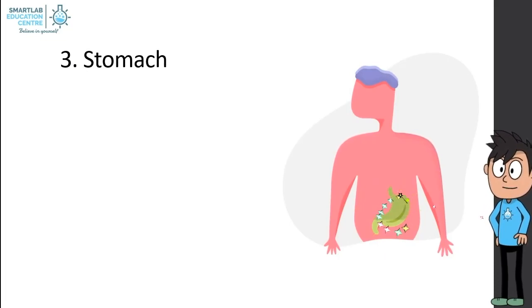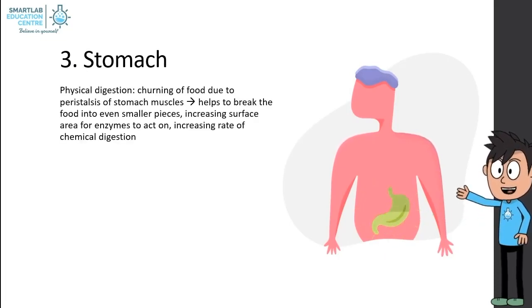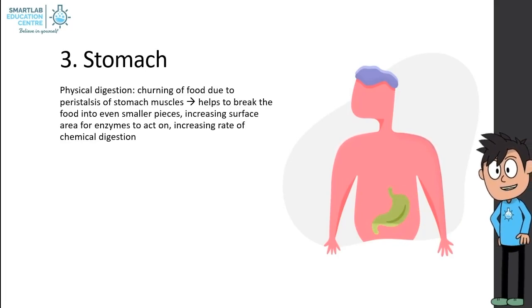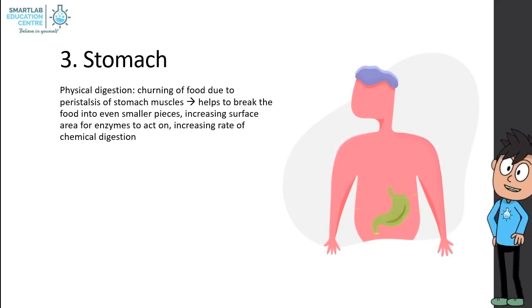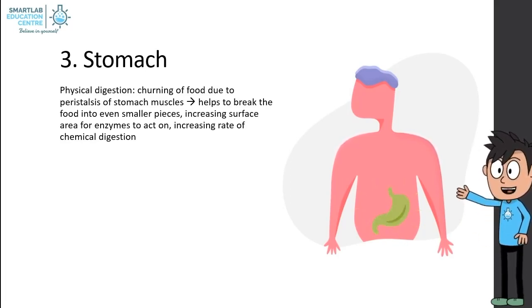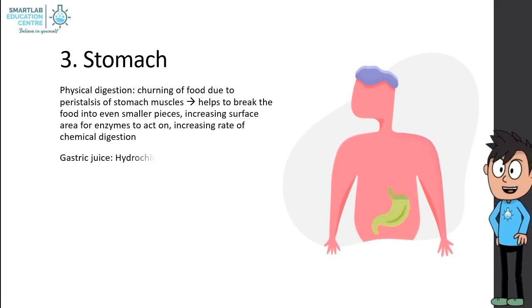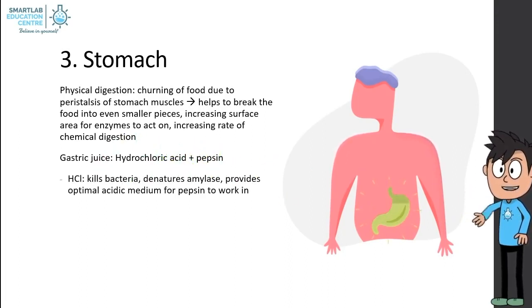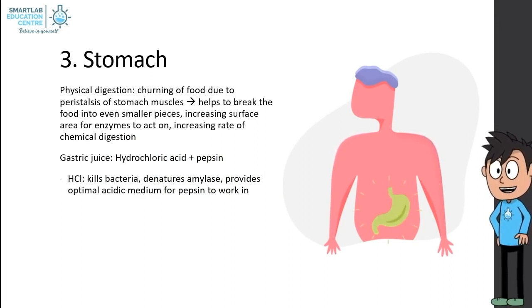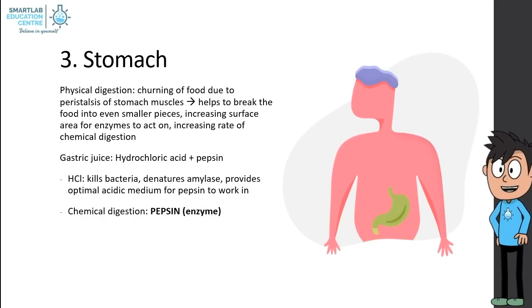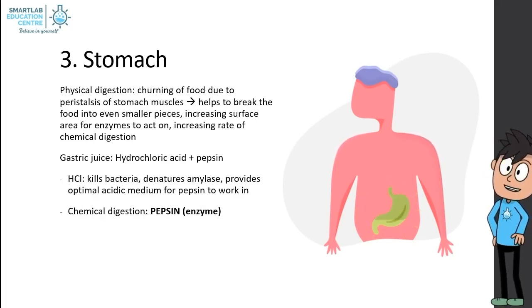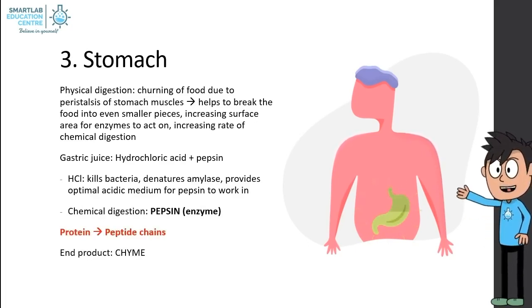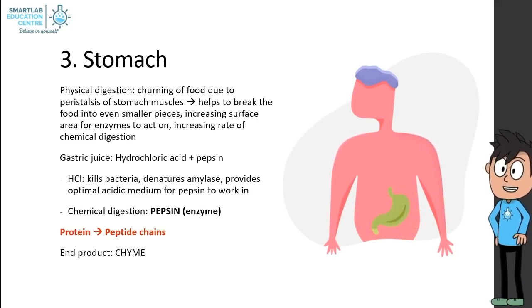The third organ is the stomach. It churns food due to peristalsis of stomach muscles, which helps break the food into even smaller pieces, increasing the surface area for enzymes to act on, hence increasing the rate of chemical digestion. It has gastric juice, which consists of hydrochloric acid and pepsin. Hydrochloric acid kills bacteria, denatures amylase, and provides an optimal acidic medium for pepsin to work in. Pepsin breaks down protein into peptide chains, and the end product is chyme.